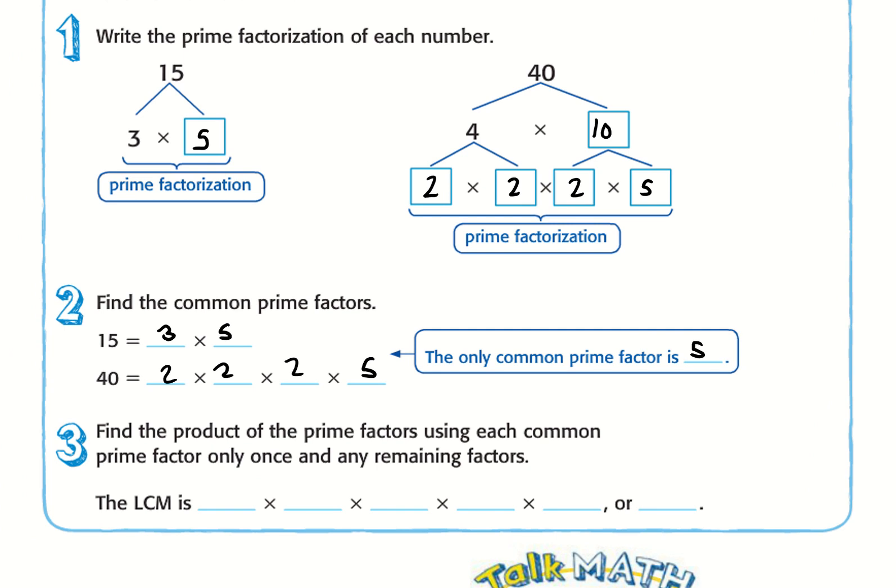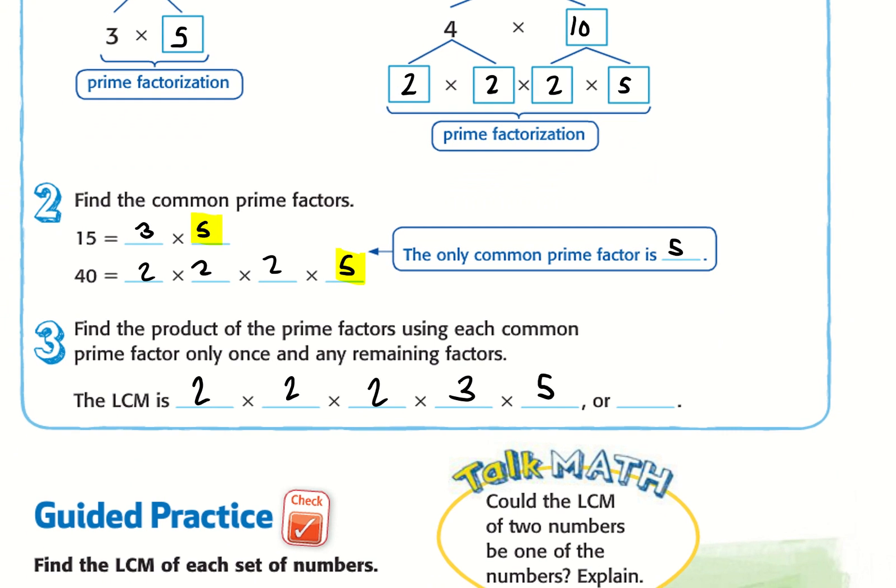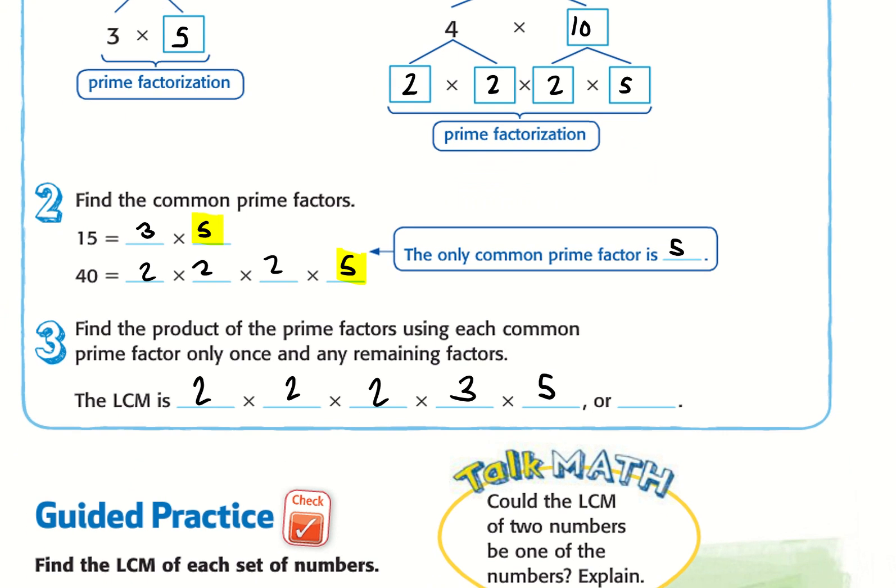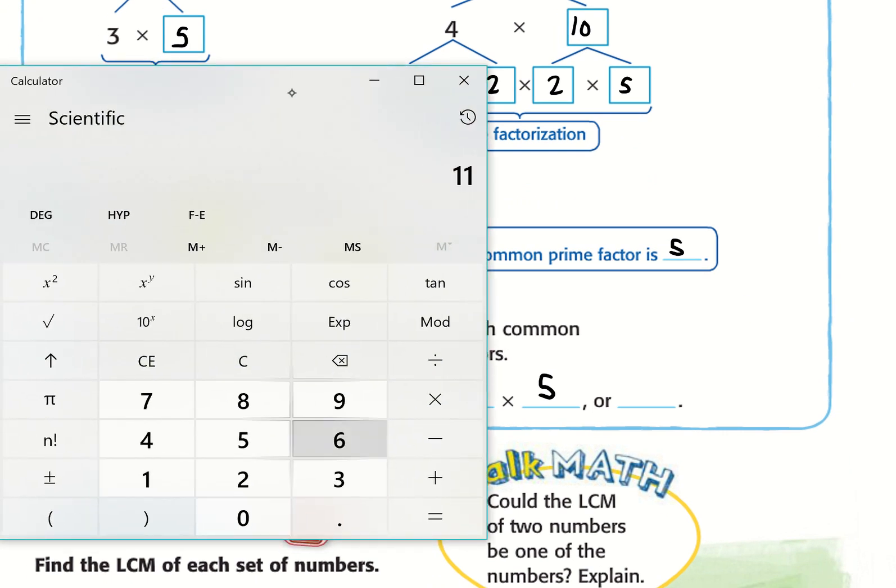Find the product of the prime factors using each common prime factor only once and any remaining factors. So these are my common ones. So my common one, I'm going to use once. Now, I just need to use the remaining factors. So I still have a two times two times two times three. These are all my remaining factors. So two times two times two is eight times three is 24. And then times five is 120.